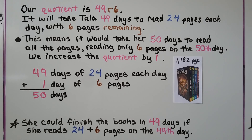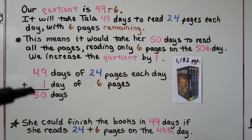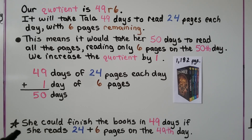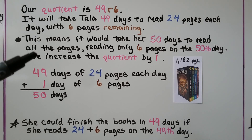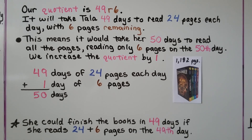We increase the quotient by 1 because there was a remainder. 49 days of 24 pages each day, and then 1 day of 6 pages, would be 50 days total to read the entire series. She could finish in 49 days if she reads the 24 pages plus the 6 remaining pages on that last day, but generally we increase the quotient by 1 if she only reads 24 pages each day.